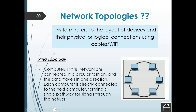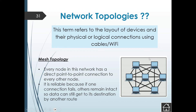The ring topology connects computers in a circular fashion and data travels in one direction. If two computers are busy transferring data, you have to wait your turn. Data traveling from one computer to another goes all the way around the ring past all other computers. Each computer is connected directly to the next, forming a single pathway for signals through the network.